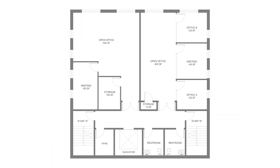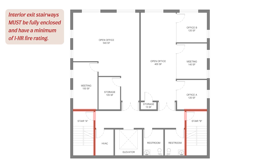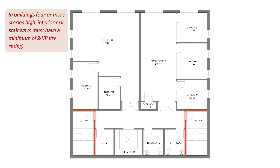Let's look at a floor plan and discuss which walls must be fire rated. Exits like fire stairs are protected spaces to allow for safe means of egress, which means those walls most definitely need to be fire rated. Vertical shafts provide the most direct path for fire and smoke to spread from floor to floor, so interior exit stairways must be completely enclosed and have a minimum of a one hour fire rating. In buildings four or more stories high, interior exit stairways must have a two hour fire rating.